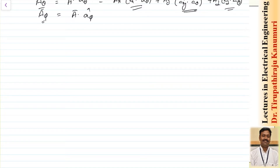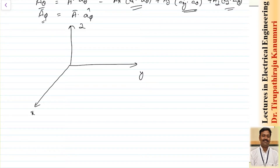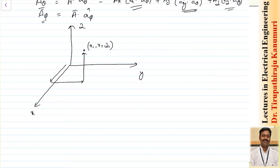In the rectangular coordinate system, there are three coordinates — x, y, and z — which are perpendicular to each other. To represent any point, we note how much it is shifted in the x direction, then in the y direction, then in the z direction. So a point is represented as (x1, y1, z1), obtained by shifting in each direction.